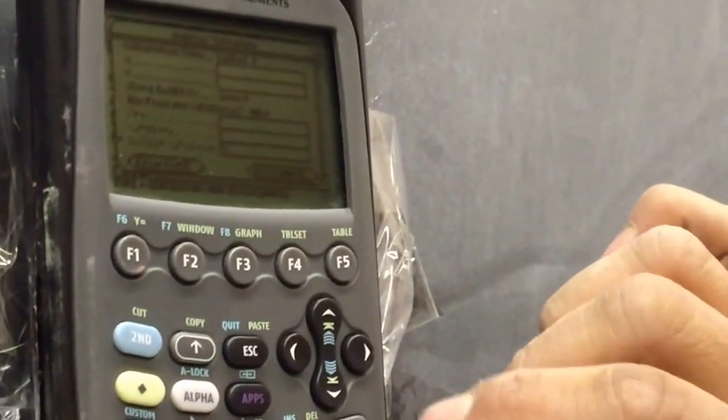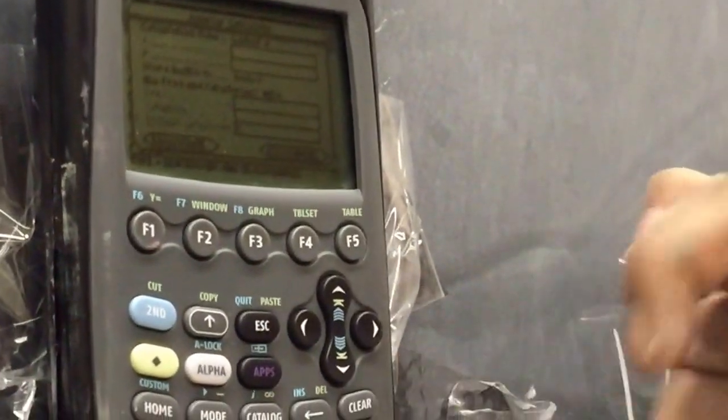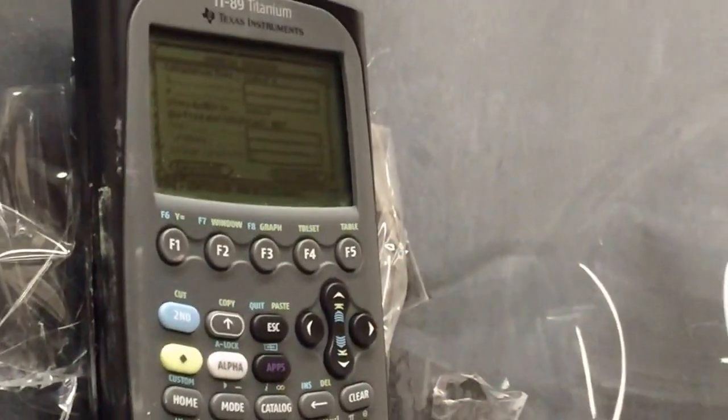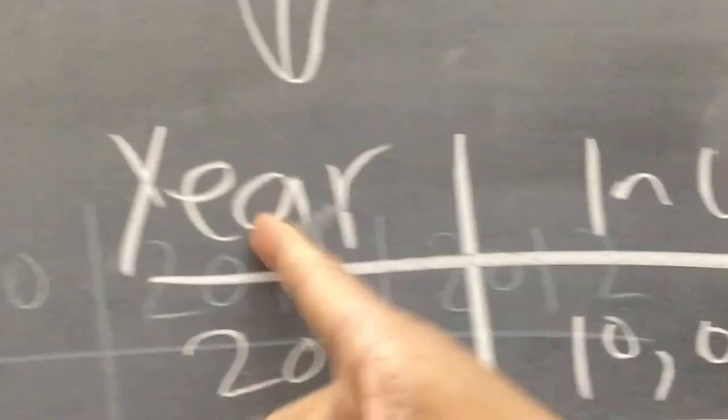So if I move down, I'm going to select, of course, C1. Why C1? Because C1 is my year. C1 is my year.